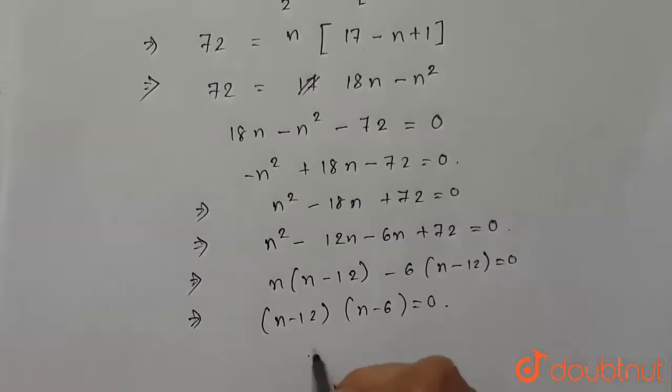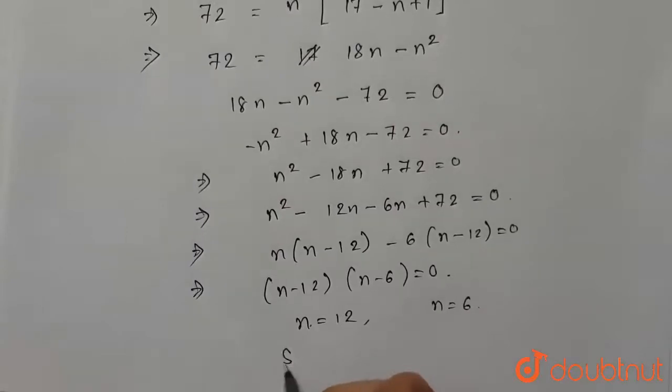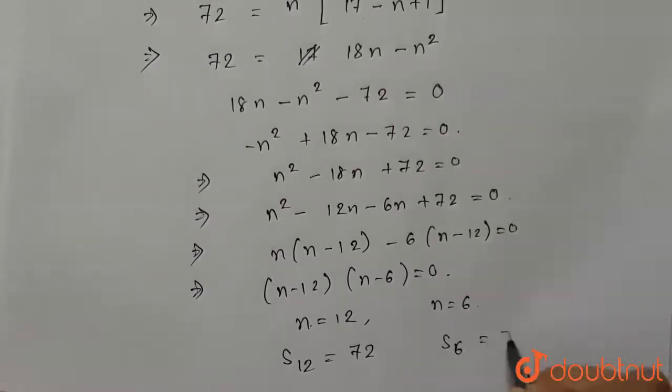Or we get (n - 12)(n - 6) = 0, so we get two values of n: n = 12 and n = 6, which means that S₁₂ = 72 and S₆ is also equal to 72.